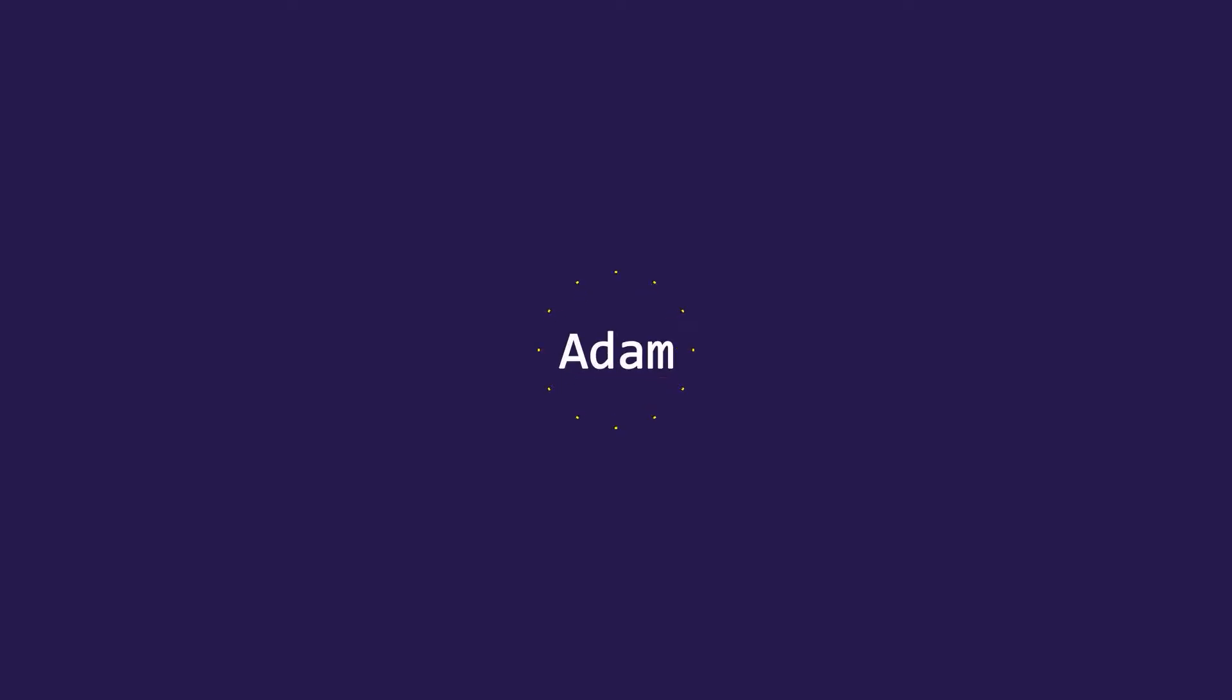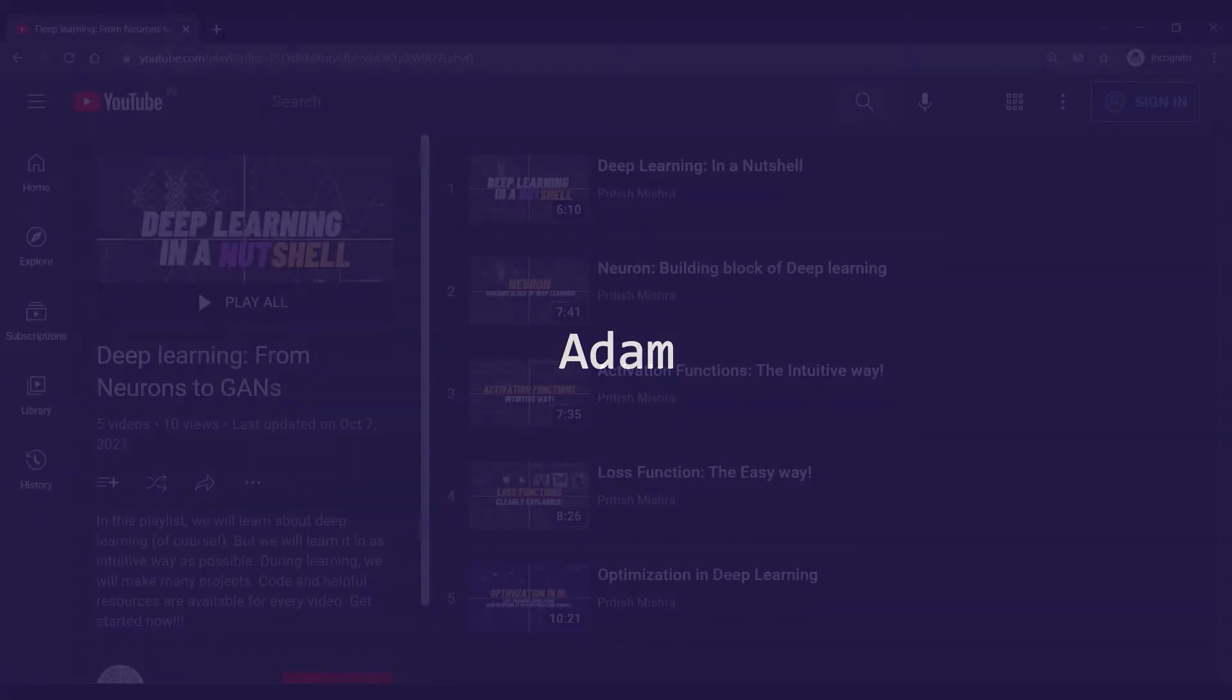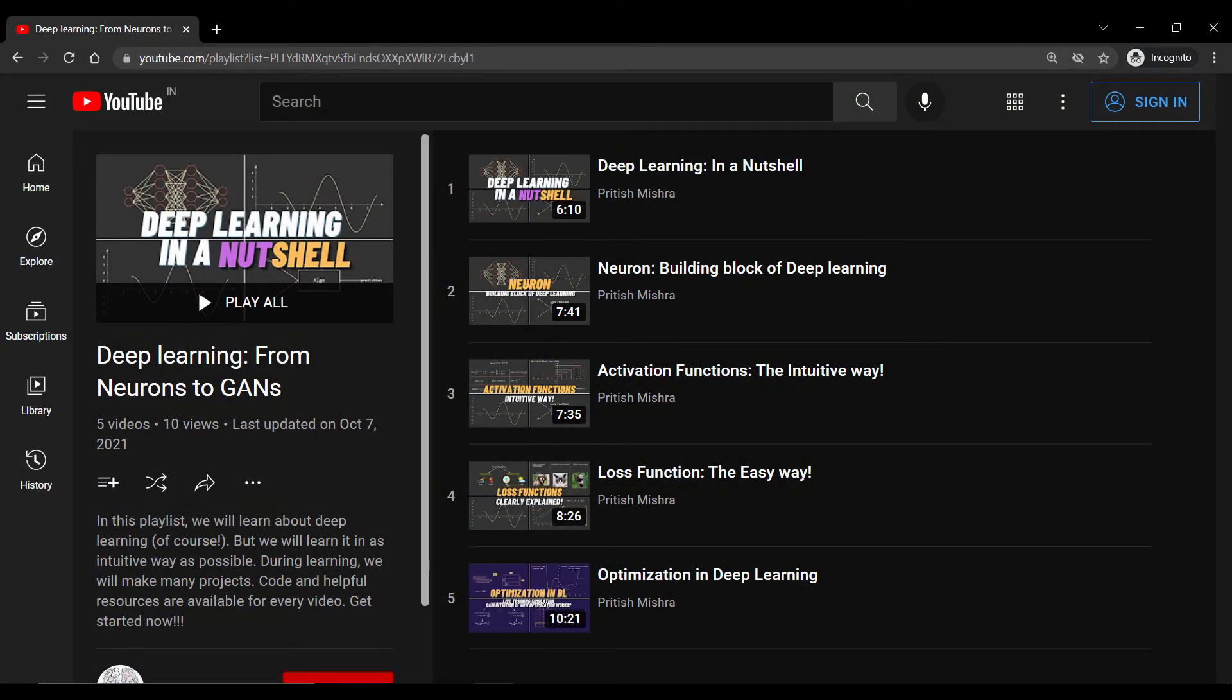Adam is the most used optimizer in deep learning. No matter what type of data you have, you can just blindly use Adam and it will just work out. This video assumes that you have seen the previous video of this series in which I've introduced optimizers. Before going into Adam, you must know the adaptive gradient method or AdaGrad for short, which is also one of the optimizers.